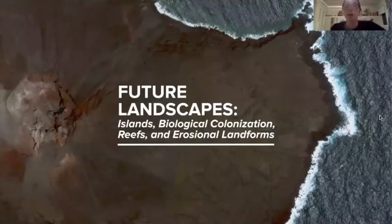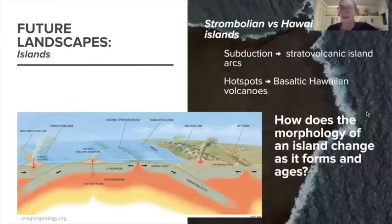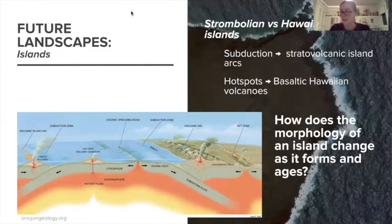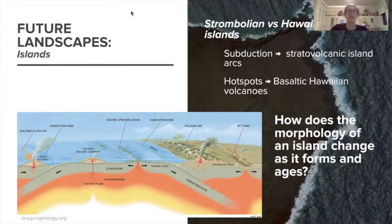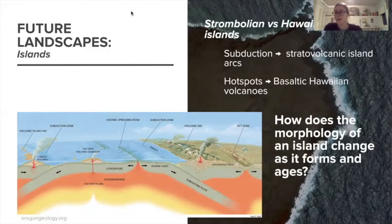Now, on a longer timescale, we'll talk about how new landscapes — especially islands — can be created by volcanoes. There are two main types of volcanic islands. Stratovolcanic island arcs are created by subduction: the subduction of one oceanic plate underneath another results in the formation of stratovolcanic island arcs. Basaltic Hawaiian volcanoes are frequently associated with hotspots — created as the oceanic lithosphere travels over a hot mantle plume. Geologists have noticed that as volcanic islands pass over a hotspot, their morphology often passes through a predictable series of stages.